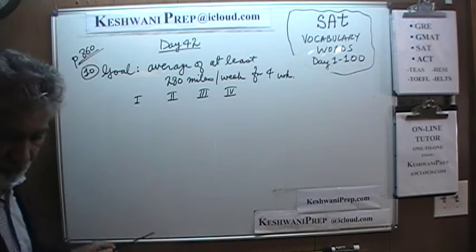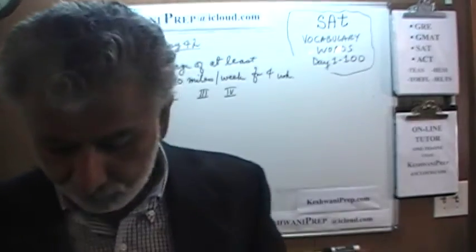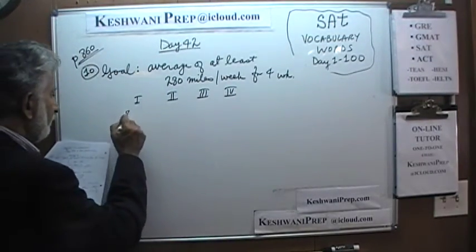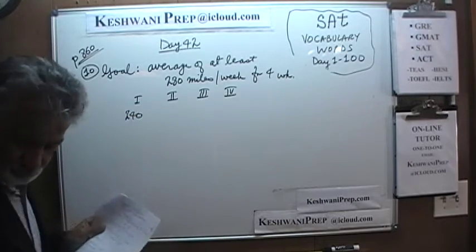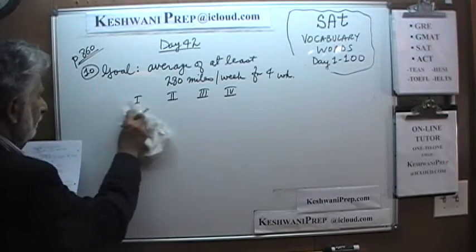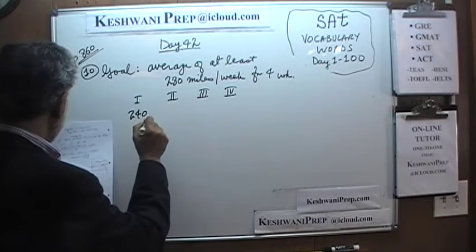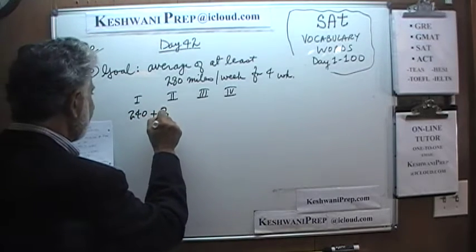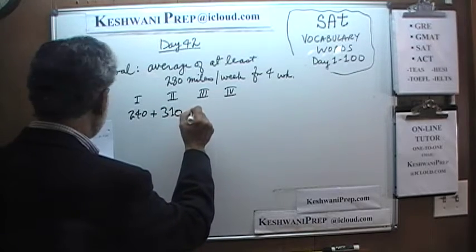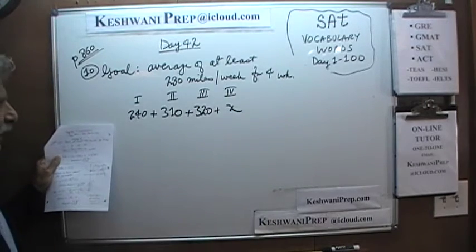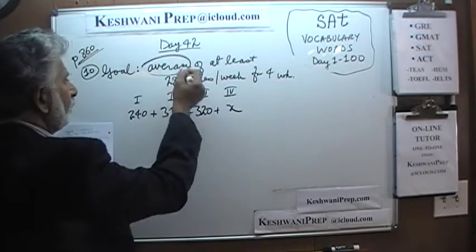First problem, as you can see, is already here. We have a goal: our goal is to have an average of 280 miles per week for the next four weeks. What we have achieved so far — the problem tells us that the first week we have done 240 miles, the second week we have done 310 miles, the third week we did 320 miles. And the fourth week is the unknown quantity. We want the average to be at least 280.